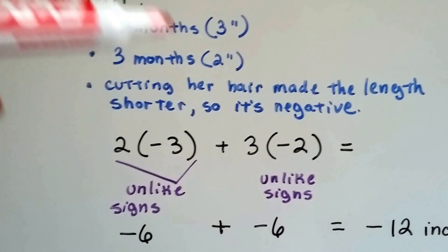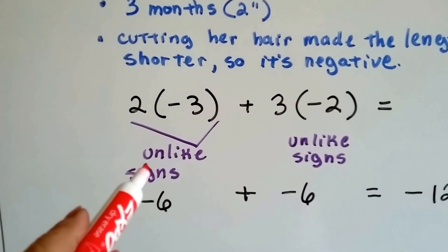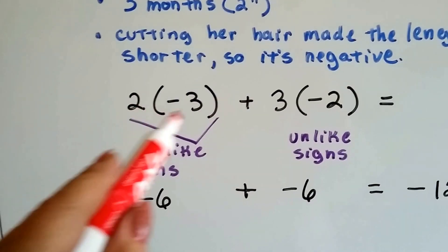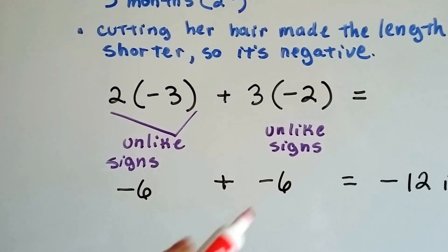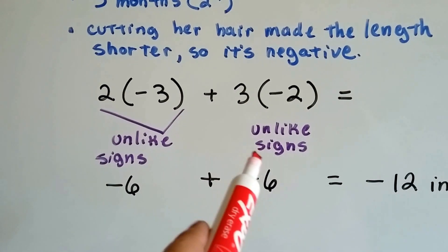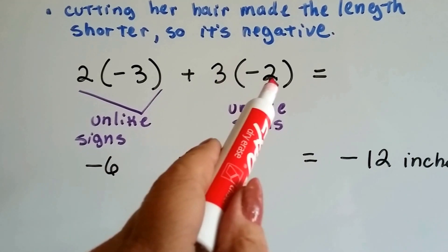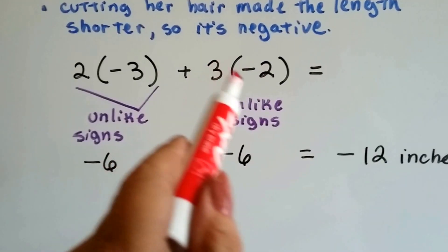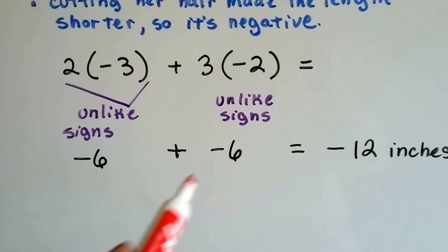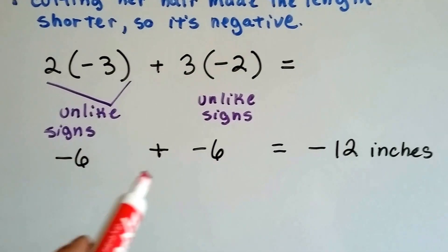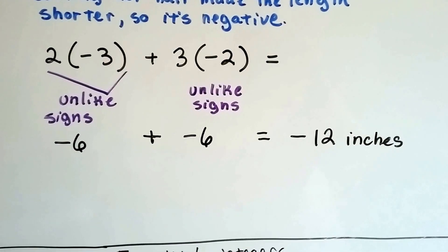But we need a total. Two times negative three — these are unlike signs, two times three is six, and because they're unlike, we have negative six. On the other side of the plus sign, we've got three times negative two: three times two is six, and because they're unlike signs, it's negative six. We add negative six to negative six, and we know she cut off a total of twelve inches.